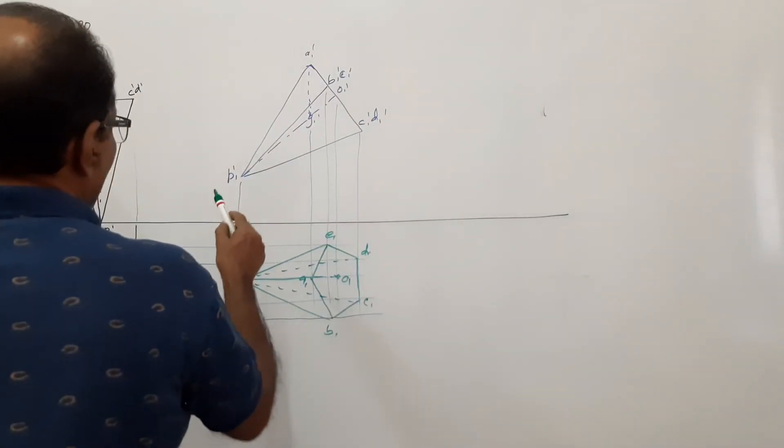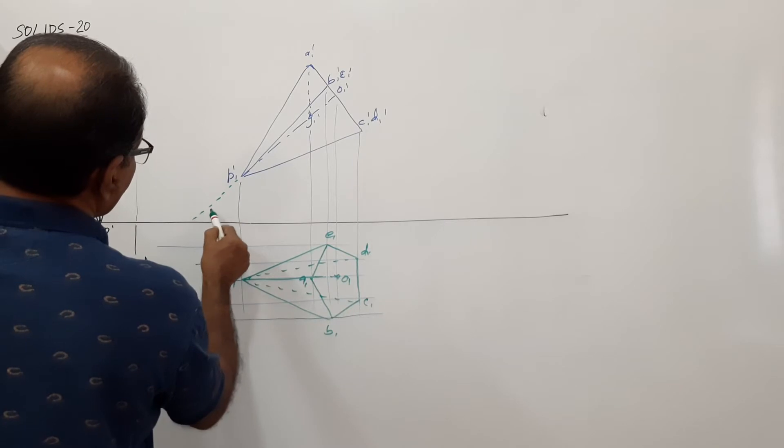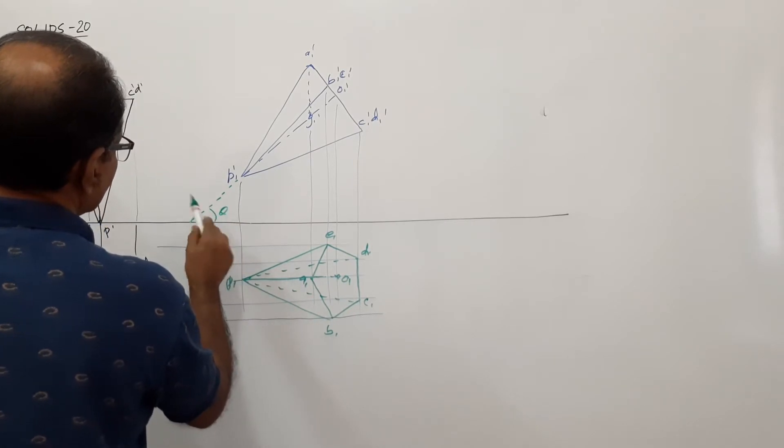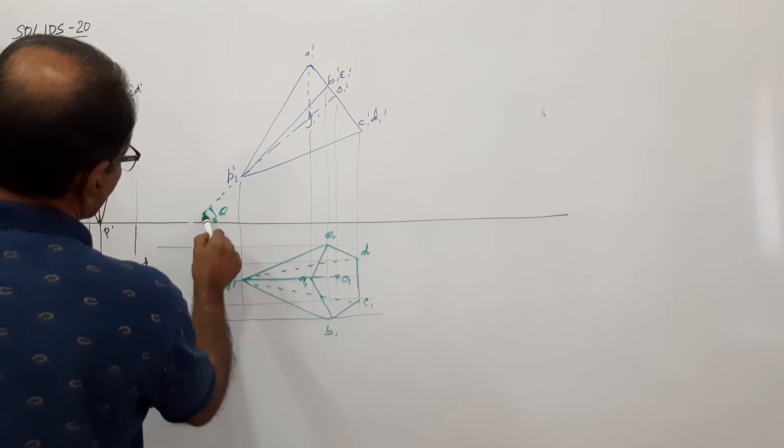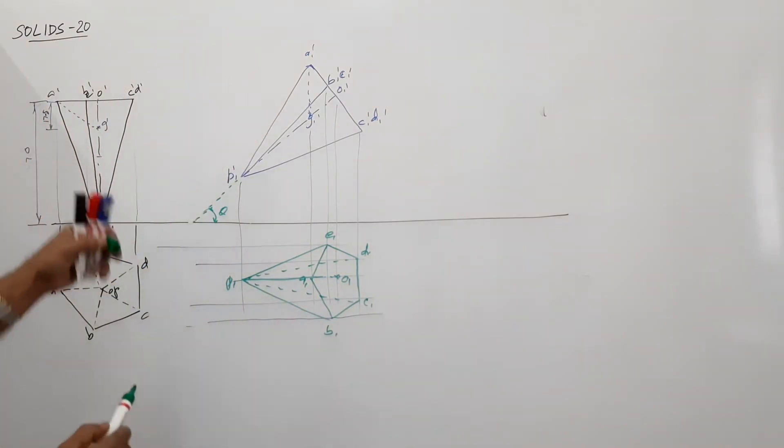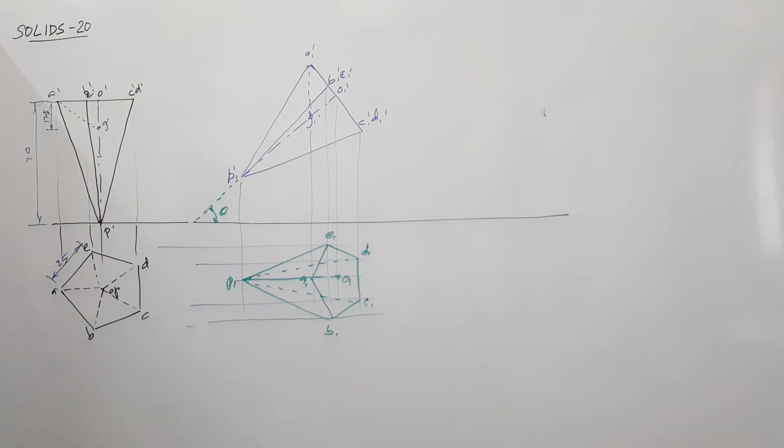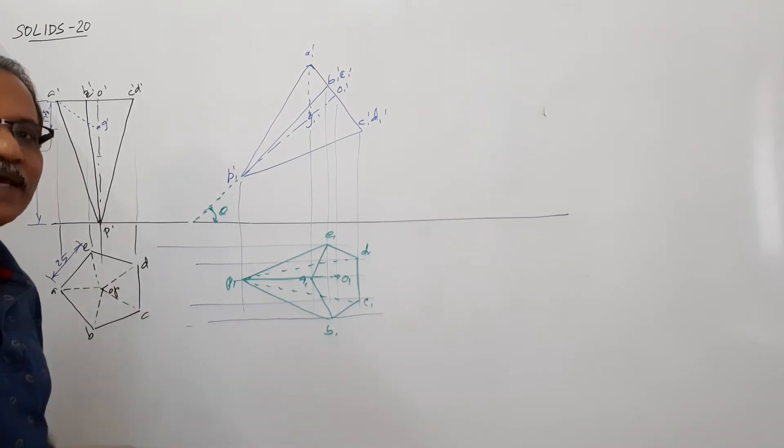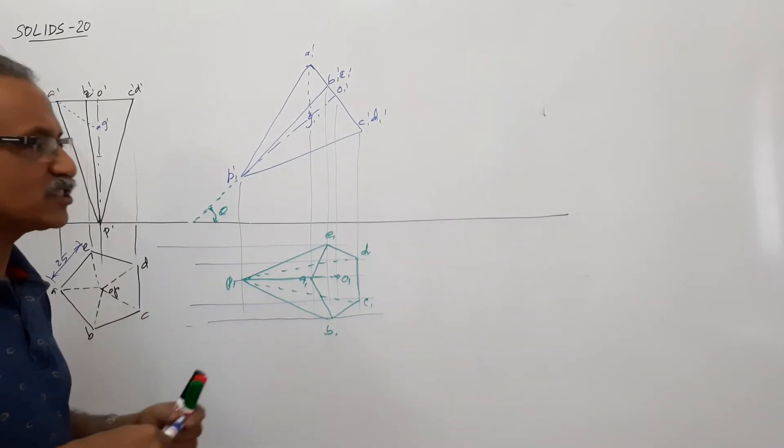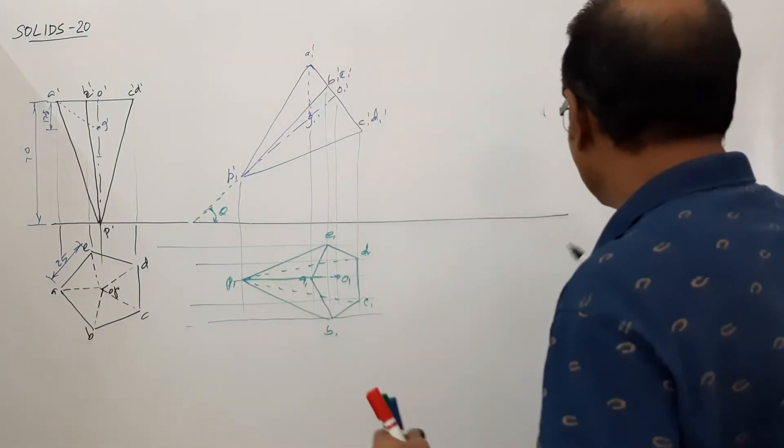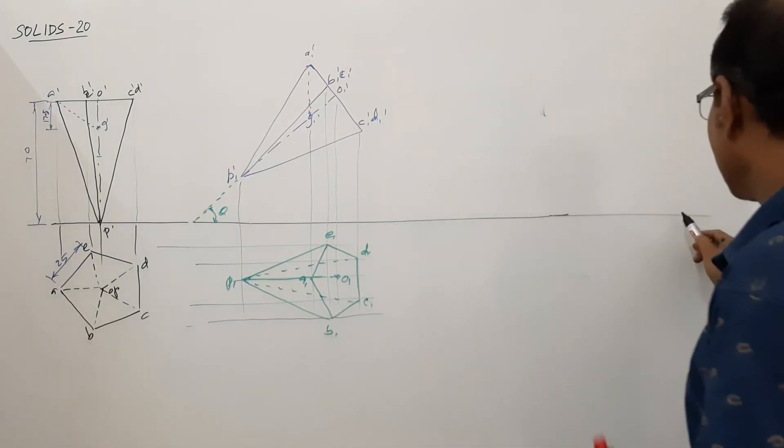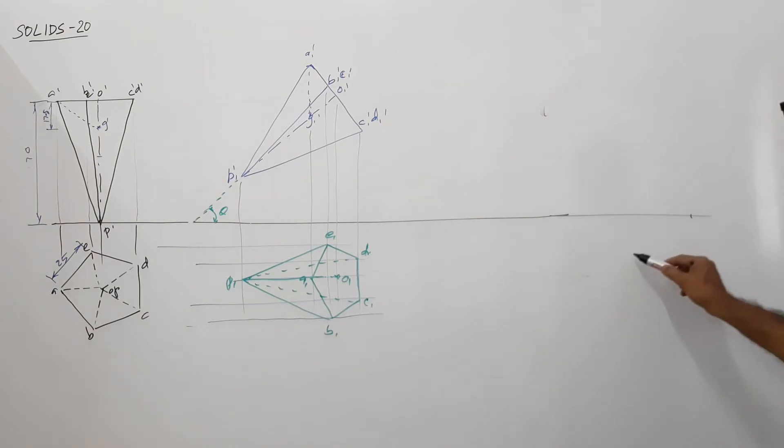If you want to find out the inclination of the axis to HP, this is theta. This is the inclination of the axis to HP. If you are asked to find out, extend the axis and find out theta. Now, you have said the axis makes 35 to HP. Phi of the axis is given. What you have to do? You have to find the beta of axis. Take any point here, draw a line. Phi equals 35.